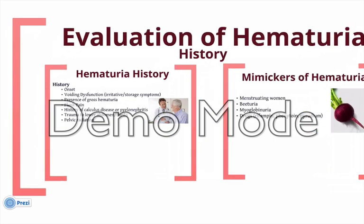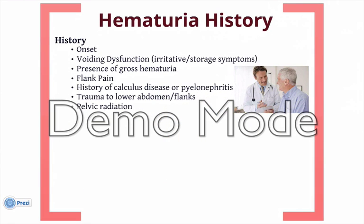The first step in evaluation would be a proper and thorough history. On history, it would be important to inquire about voiding dysfunction — specifically frequency, urgency, or significant nocturia. These are called irritative or storage-related voiding symptoms and could sometimes indicate significant intravesical pathology. In addition, we should inquire about the presence of gross hematuria, any significant flank pain, history of pyelonephritis, and history of calculus disease.